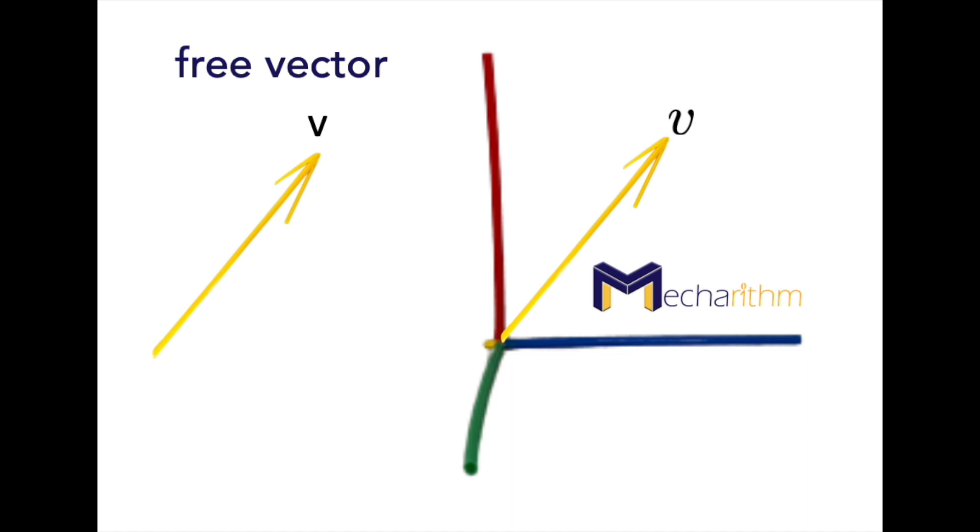A free vector is a geometric quantity and it's an arrow in our three-dimensional flat space R3 that is not rooted anywhere. It has a length and a direction. In robotics, a free vector is denoted by the capital V.